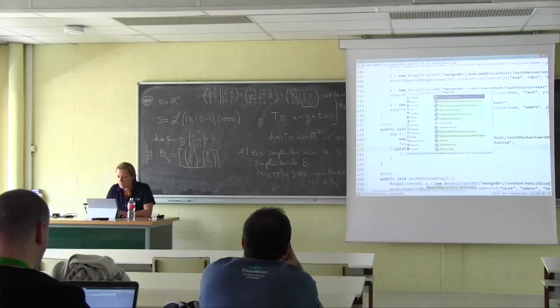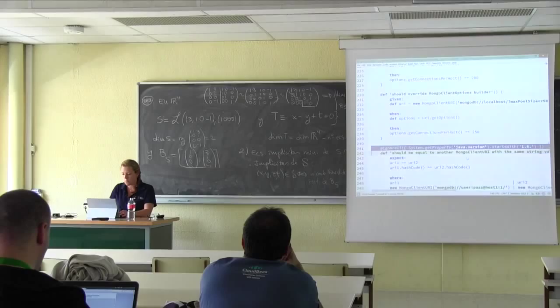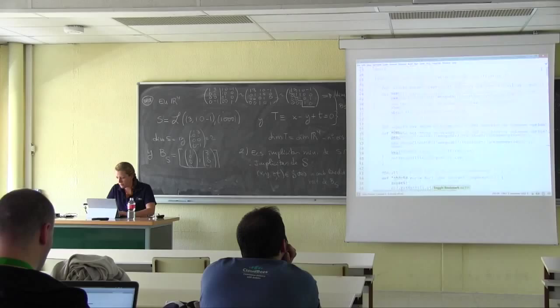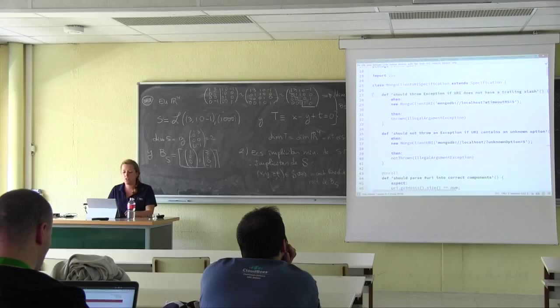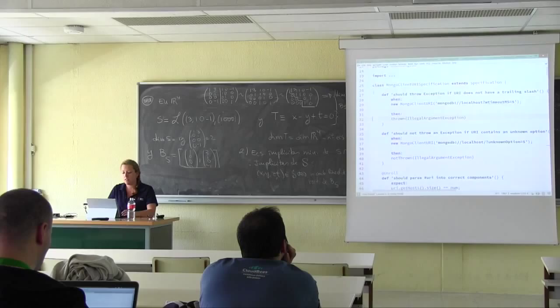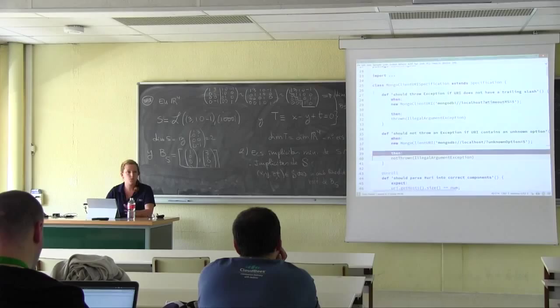So let's look at the Spock version — the MongoClient Specification. This is the first two tests converted into Spock. Arguably they're a little bit longer because you have your when, your then, and your nice spacing. But here, your test to make sure an exception is not thrown is really explicit about what you're testing.